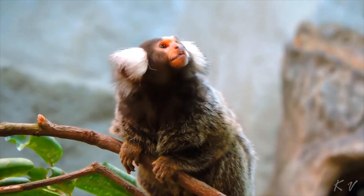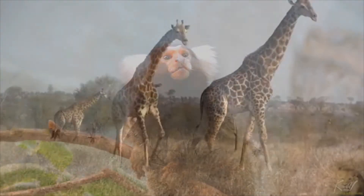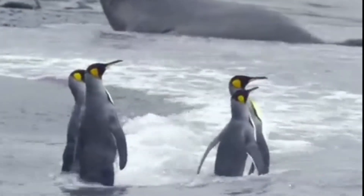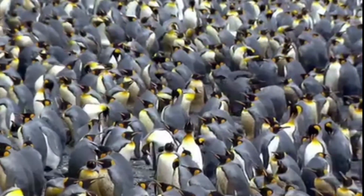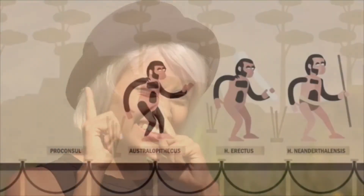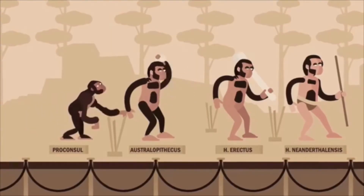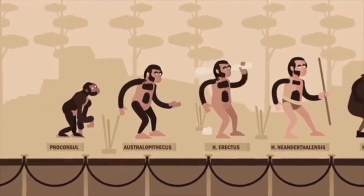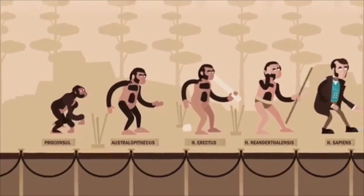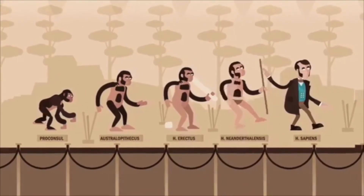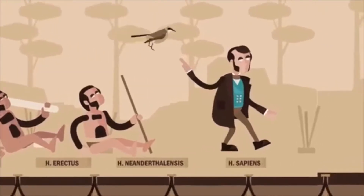So what is evolution, natural selection, and adaptation? And how are all of these concepts related? This documentary will answer all of these questions. Charles Darwin defined evolution as descent with modification — the idea that species change over time, giving rise to new species, and share a common ancestor.